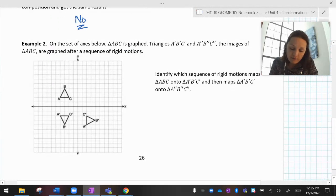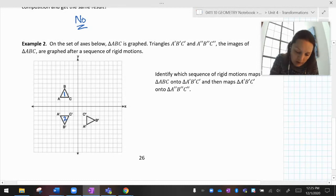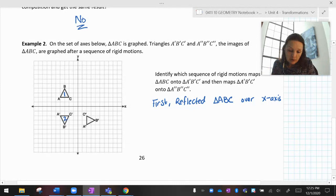All right. So then it says, come down here. ABC is graphed. A'B'C' and A"B"C" are the images of ABC after a sequence. Identify the sequence that maps the original onto the newest one. Okay. So let's see. If I call this number one, then this would be number two. So how did I get from number one to number two? Well, it looks like I just folded it over the x-axis. So first we reflected triangle ABC over the x-axis.